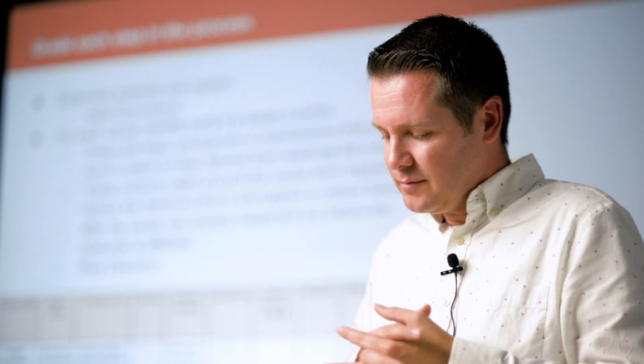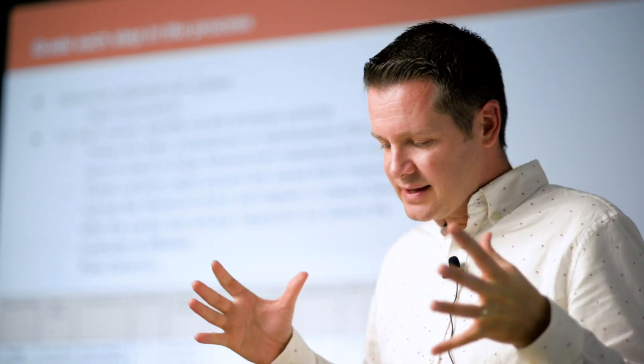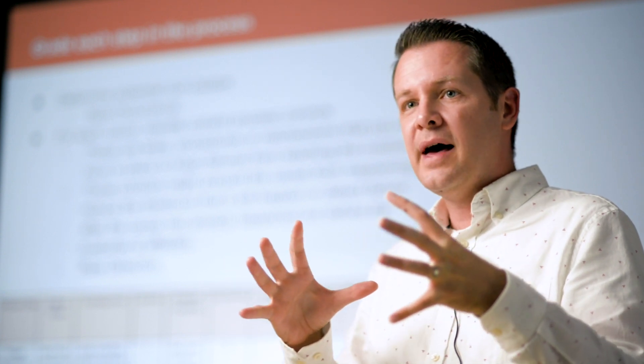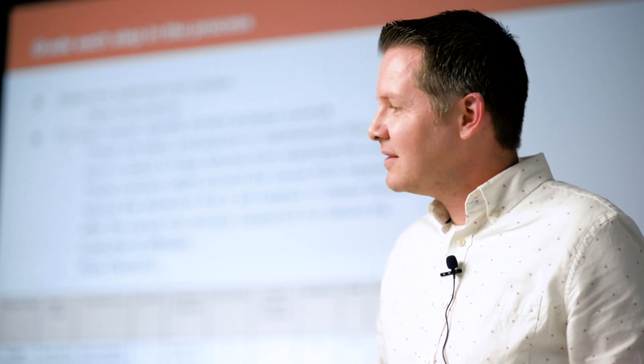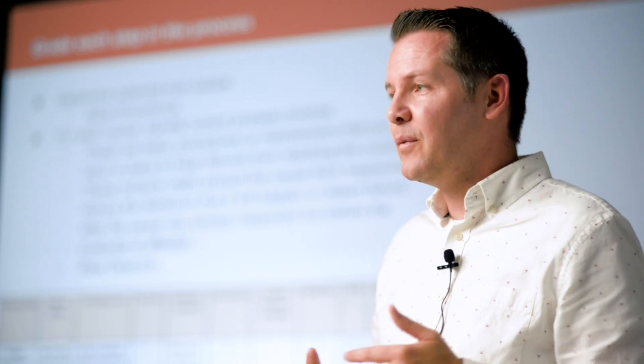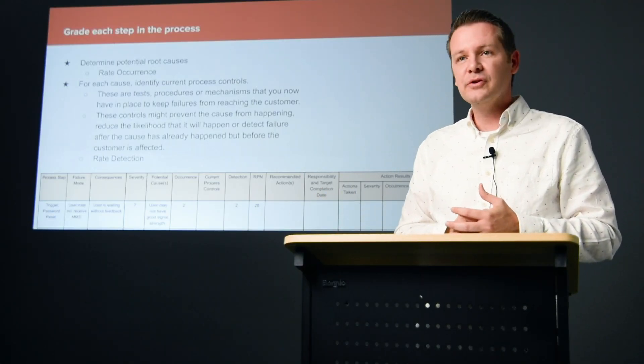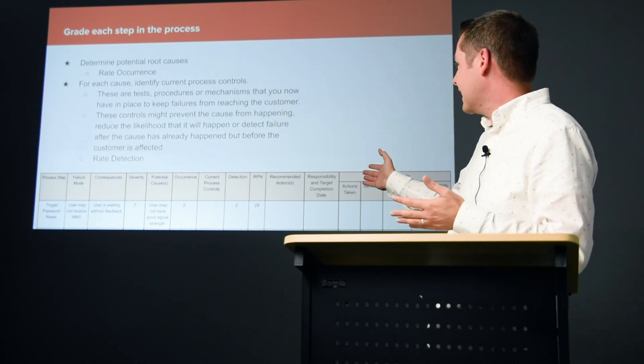For each cause, we identify any current controls that are in place to try to catch these problems. Are there tests or procedures we have right now that if something breaks or fails, it prevents it from reaching the customer? What's the likelihood that we would even know about it if it did break?